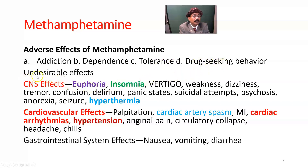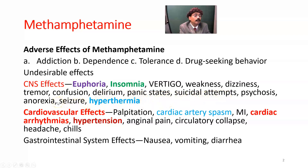Undesirable effects may be classified into CNS effects. Because of excessive dopamine and prevention of dopamine reuptake, there will be euphoria. Other CNS effects include insomnia, vertigo, weakness, tremor, confusion, delirium, panic state, suicidal attempts, and psychosis. Anorexia is also present — the person will lose body weight due to anorexia. Additionally, seizure and hyperthermia may occur.